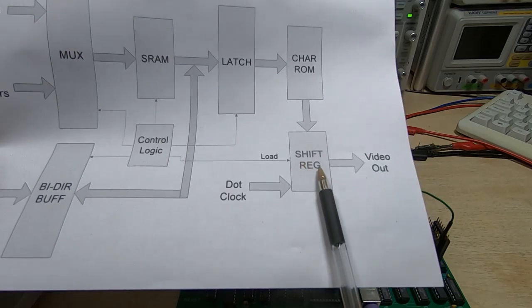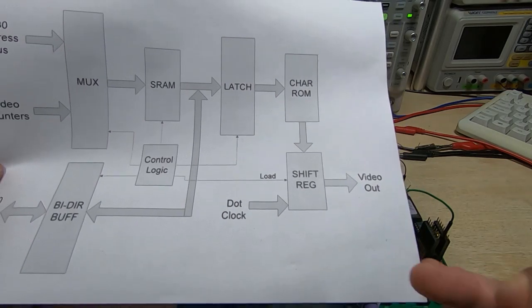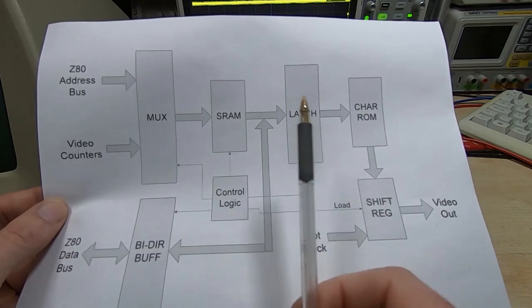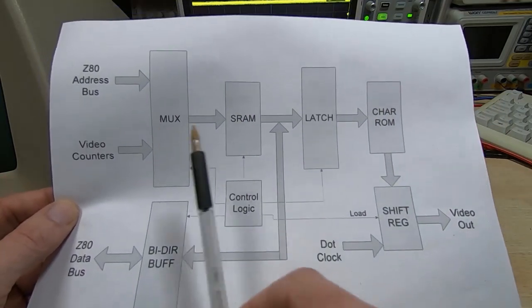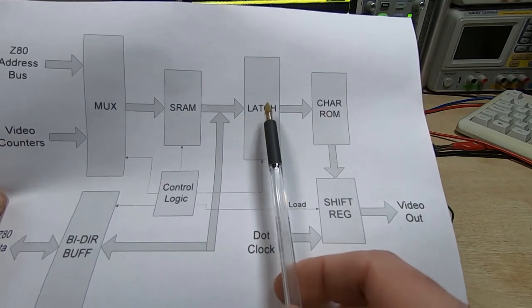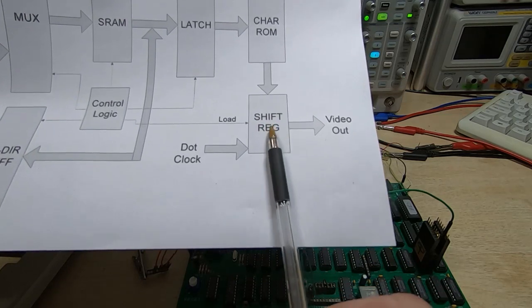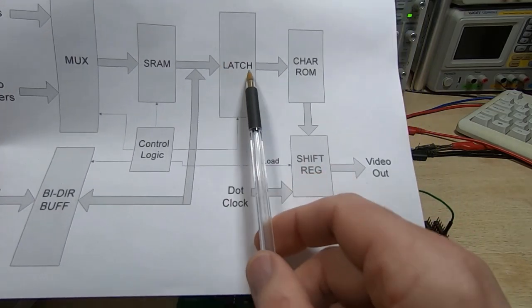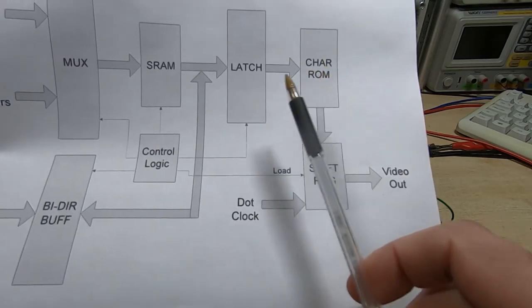The character ROM contains all the bitmaps required to create the images of the characters. That's sent through to a shift register and turned into serial form that can be fed through to the monitor. This is a fairly dynamic process and it goes on continuously. We can't stop it, pause it, or interrupt it, otherwise we would end up with a synchronization problem. The value currently being latched into the buffer is not the same data currently being sent to the shift register, even though they're fed by effectively the same signal.